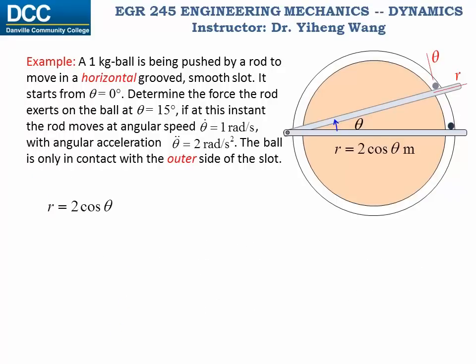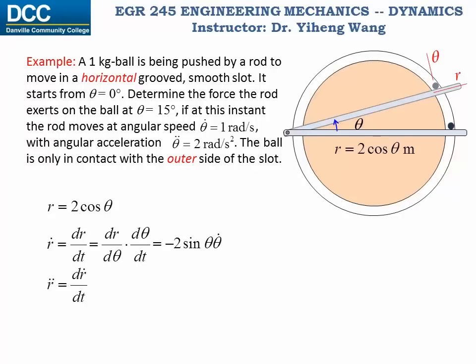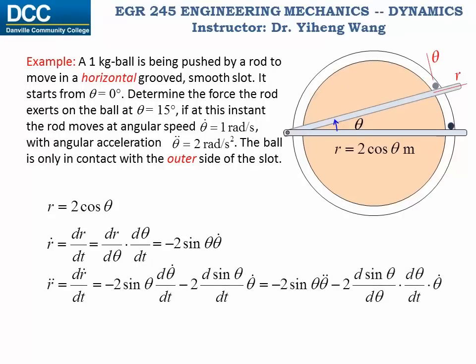Since we know the function of the path r equals two times cosine theta, r-dot, which is dr/dt, equals by the chain rule dr/dθ times dθ/dt. Here dr/dθ is negative two sine theta, and dθ/dt is simply the angular velocity theta-dot. Then r-double-dot, the second time derivative of r, equals by applying the product rule first and then the chain rule. Here theta-double-dot is the angular acceleration.